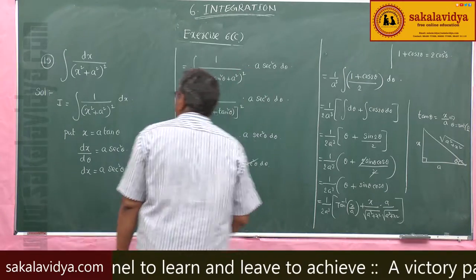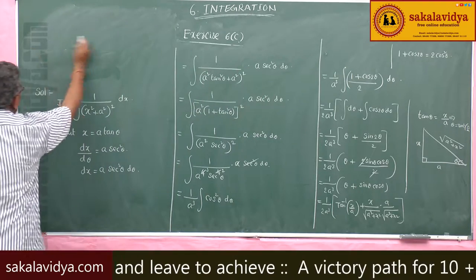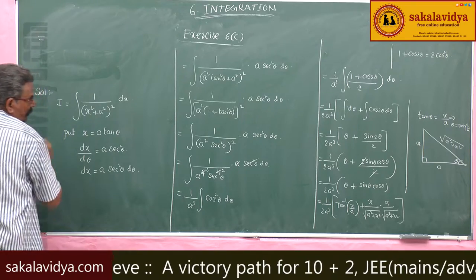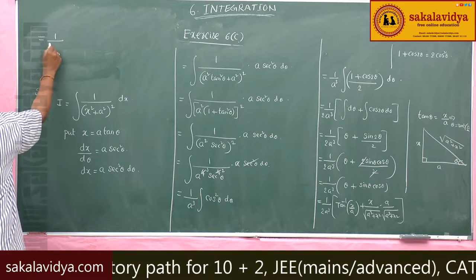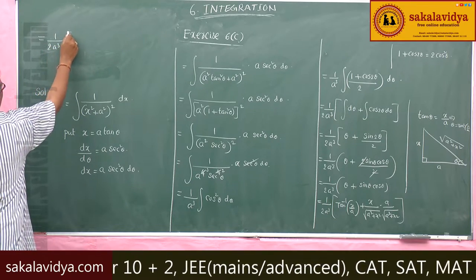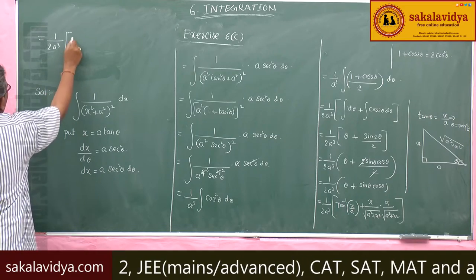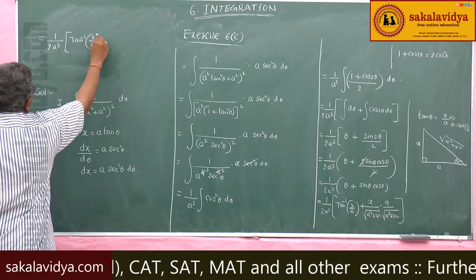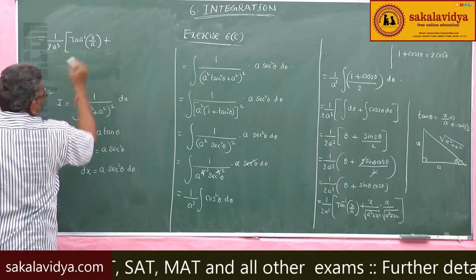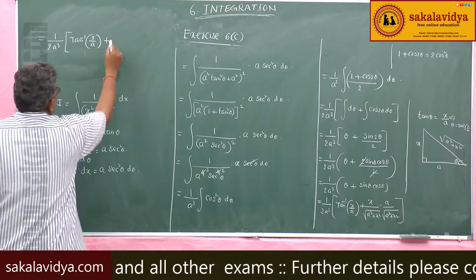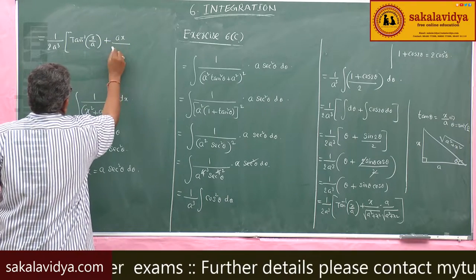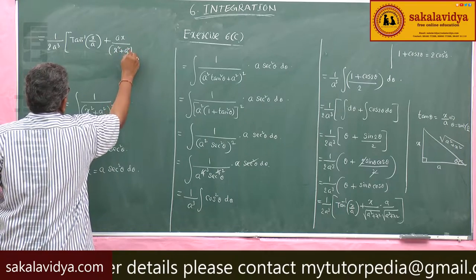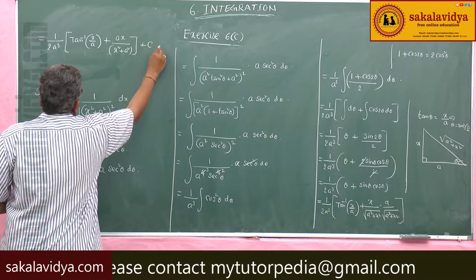The final answer is: 1/(2a³) · [tan⁻¹(x/a) + ax/(x² + a²)] + C.